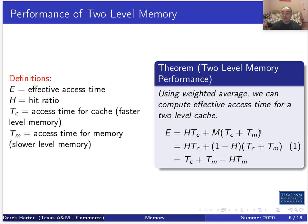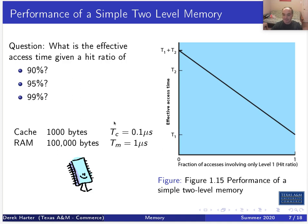This is a weighted average: 0.95 times Tc plus 0.05 times (Tc + Tm) gives us the effective or average access time for the system. You can expand this out — since the miss ratio M equals 1 minus H (the hit ratio), another equivalent form is: effective access time = Tc + Tm − H·Tm. These are all equivalent ways to calculate the effective access time.